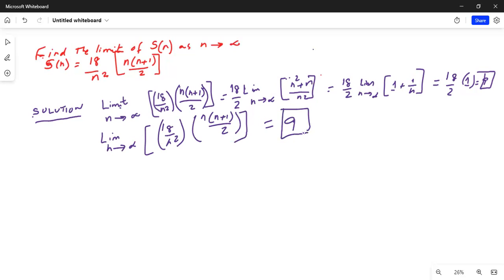That's your final answer because 18 divided by 2 is 9 multiplied by 1 is 9.